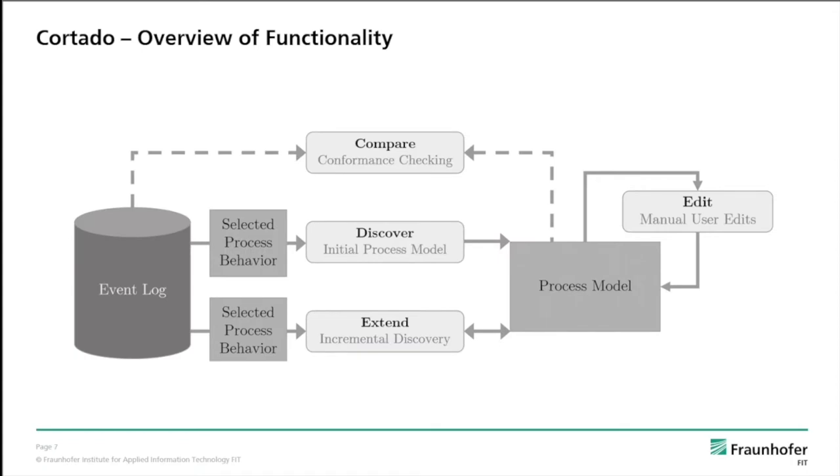On this slide, you see a rough overview of the functionality offered by Cortado. Starting from an event log, a user can select process behavior from which he or she wants to discover an initial process model, which is needed for incremental process discovery as introduced before.